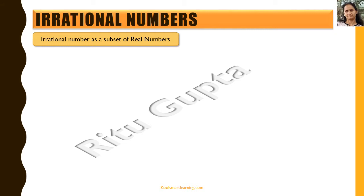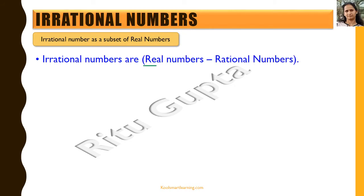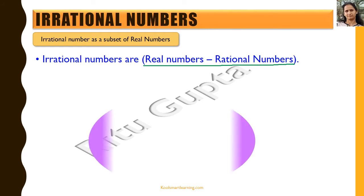Now let us understand irrational numbers as a subset of real numbers. Irrational numbers are basically real numbers minus the rational numbers. So all the numbers which are not rational but are real are irrational numbers.